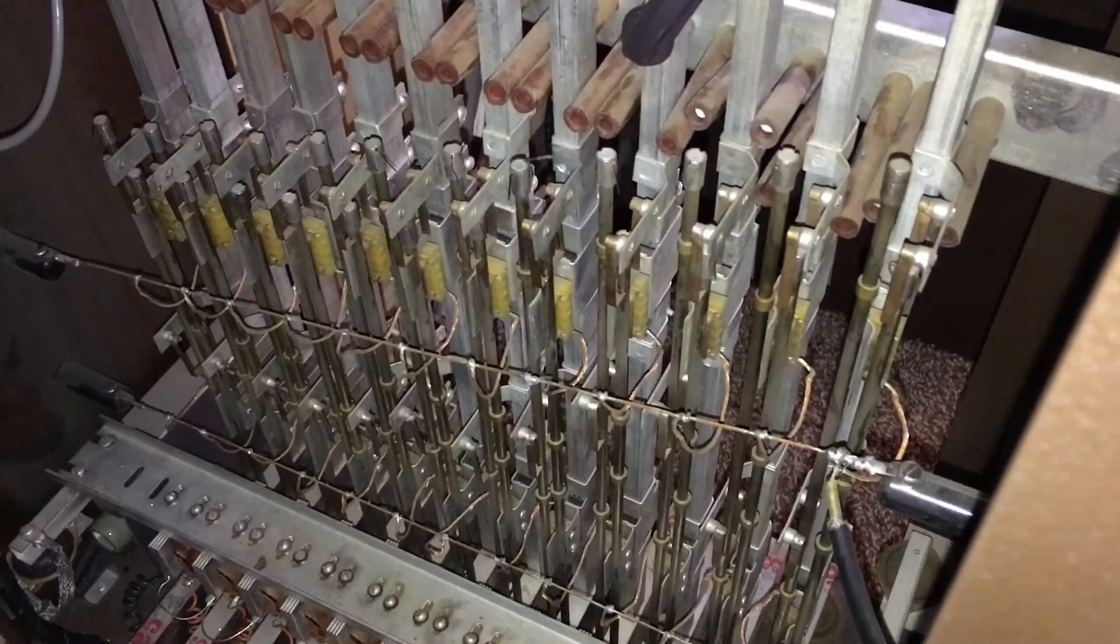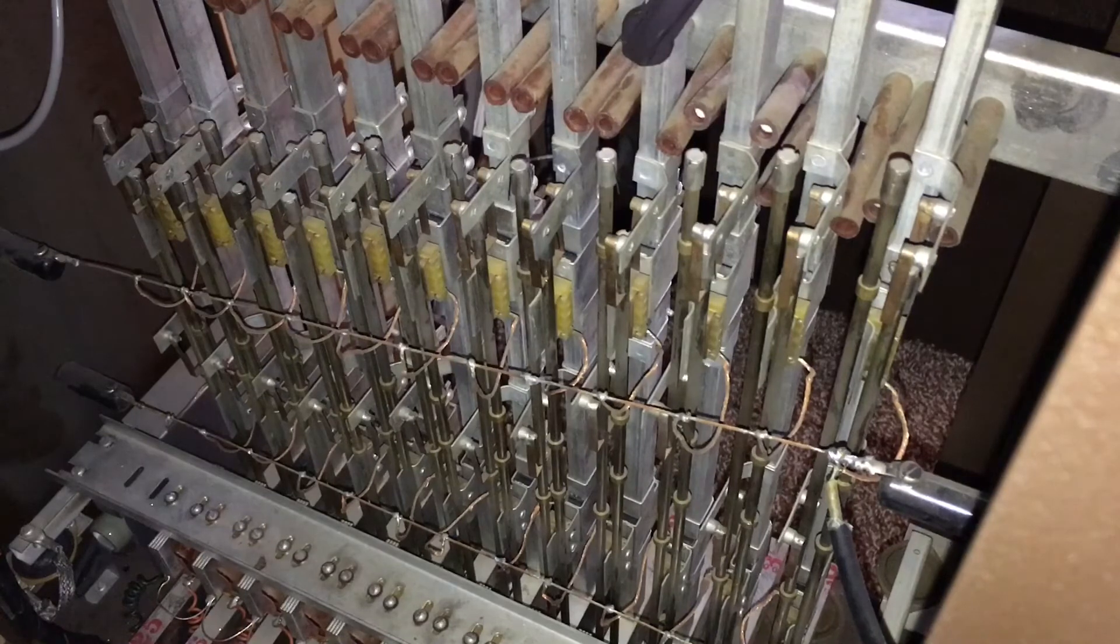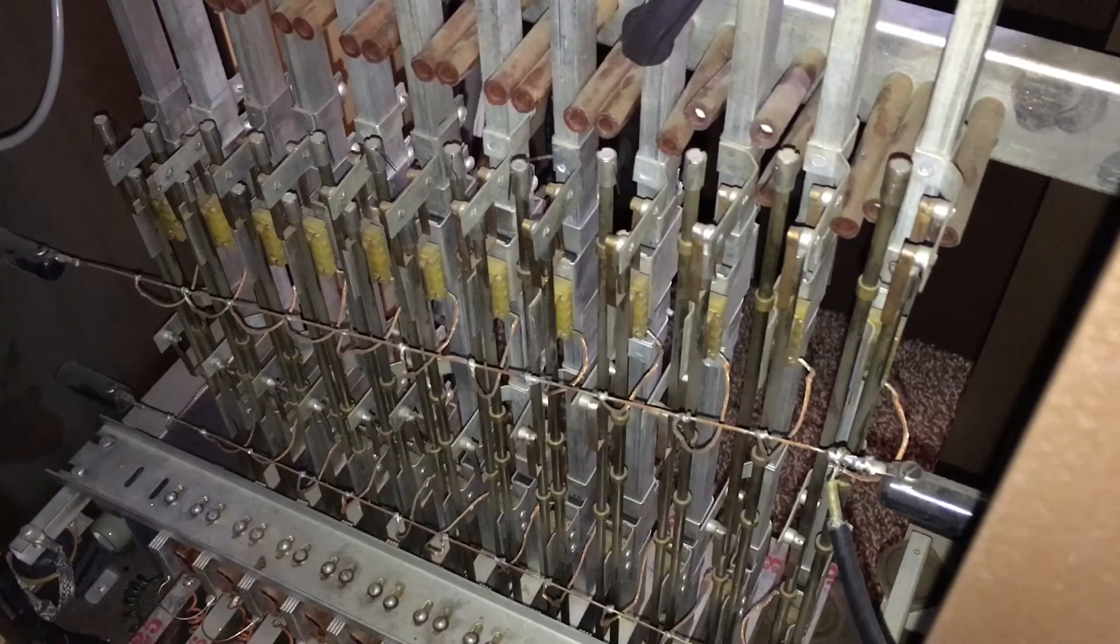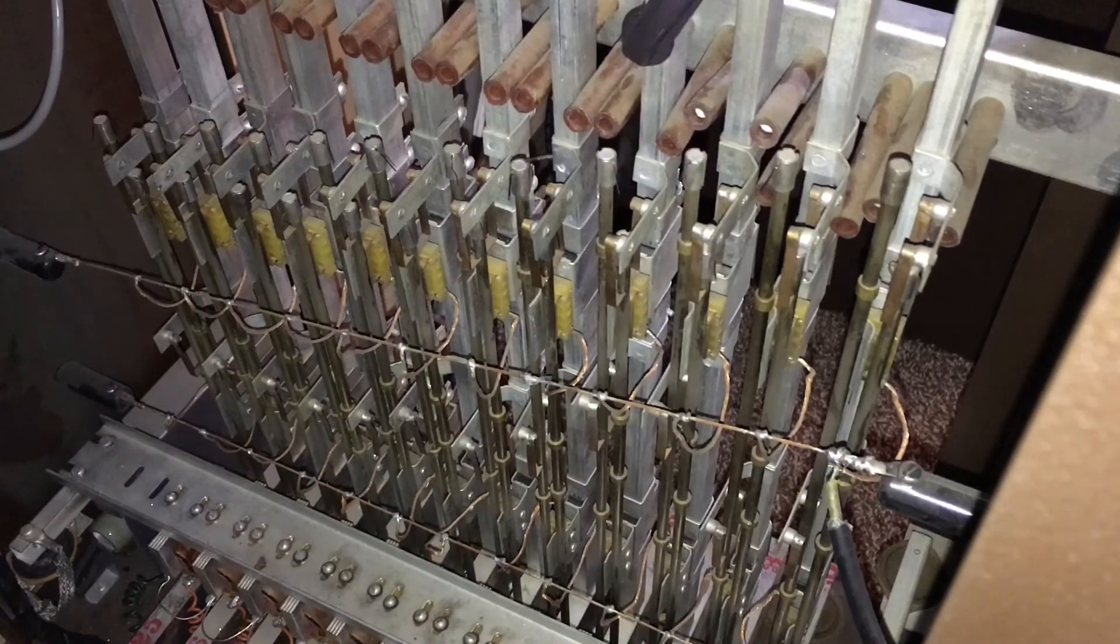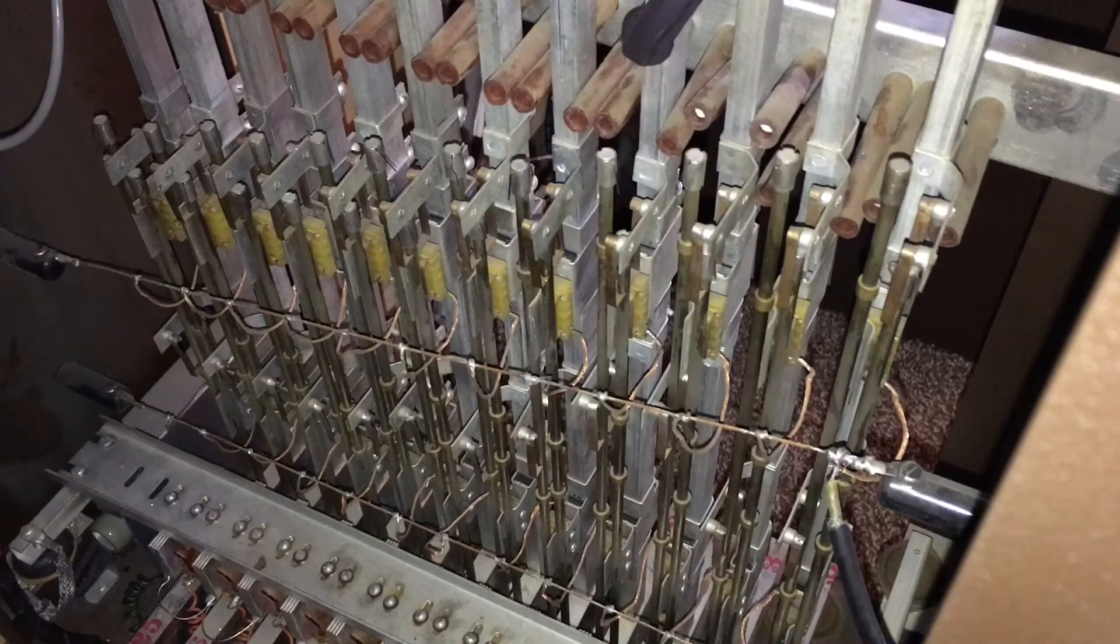Here's the inside of octave three, the middle octave. The lowest note here is the C sharp above middle C, and it goes to the third space C in the treble staff. You can see some of the elements that appeared in the patent drawings here. The rods obviously are in pairs.